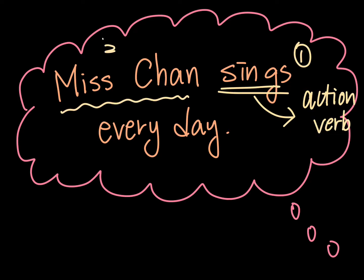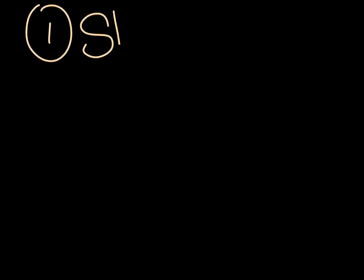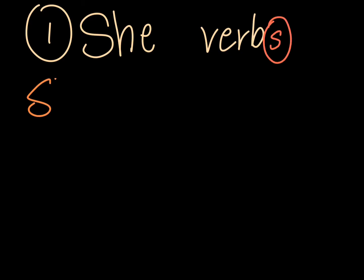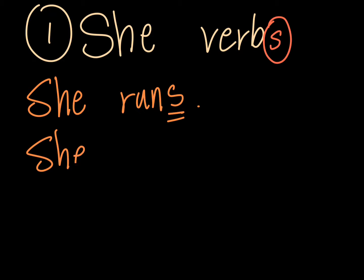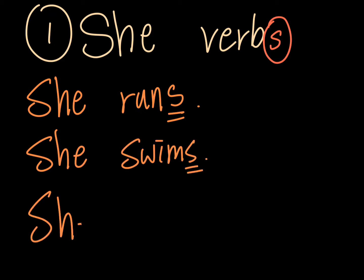The second thing you should notice is that Miss Chen is actually a 'she.' So after 'she,' we need to add S after the verb. Like: she runs, she swims, and she jumps.